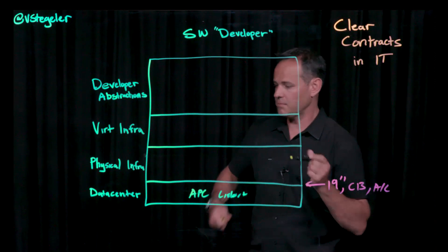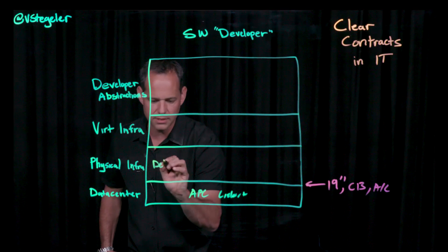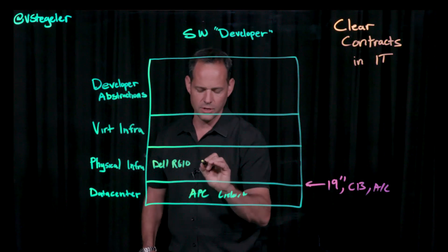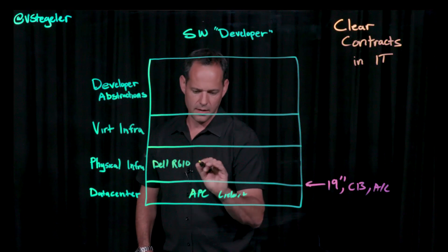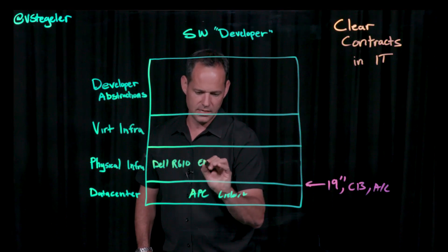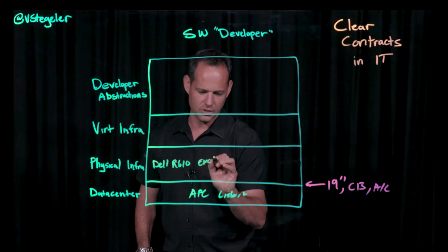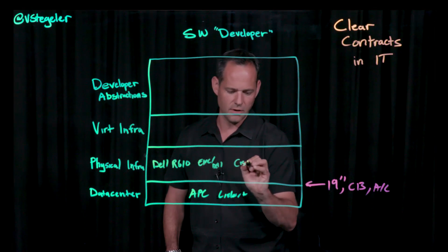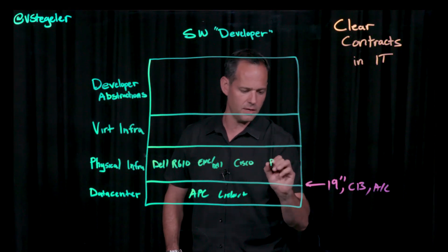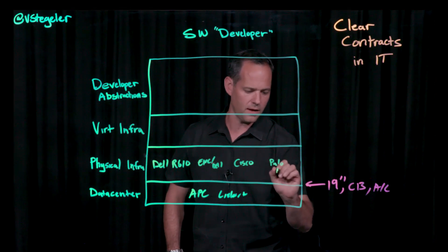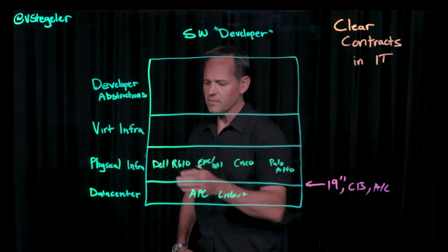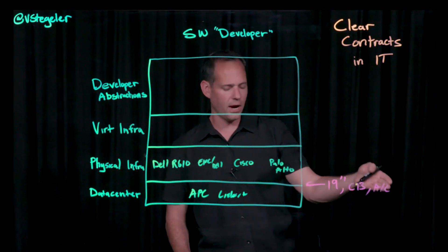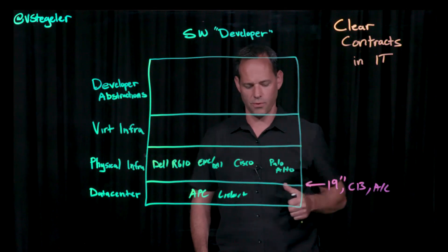Meanwhile, the infrastructure team gets to go and choose a Dell R610 for their server, EMC/Dell for storage, Cisco for networking, and maybe Palo Alto for their firewall. Provided all those things fit in a 19-inch rack and meet the power and cooling requirements, you're good to go.